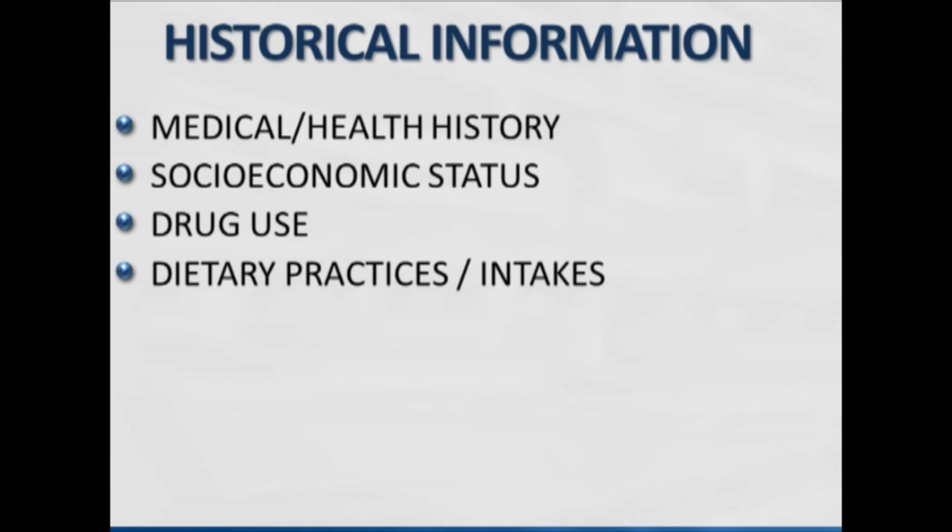Referring to the historical information, these are the four points that are quite relevant and pertinent to the assessment: first, the medical history and health history of the person; the socioeconomic status; the drug use; and of course the dietary practices and intakes of the individual. What have they historically been doing, how have they historically eaten, what are their dietary practices?